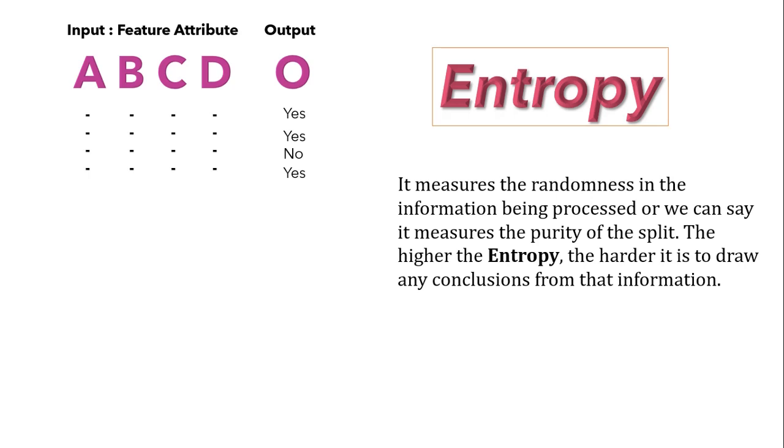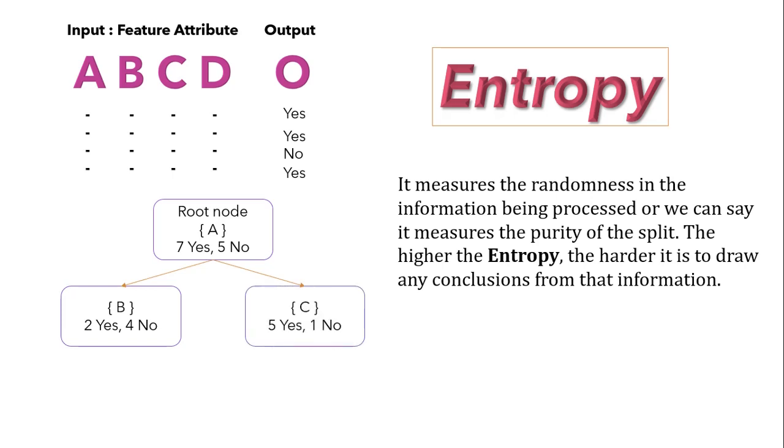Entropy measures the purity of split. Let's say my root node has 7 yes and 5 no, and when I split this into branches and come to node B, I got somewhere around 2 yes and 4 no, and at node C I got 5 yes and 1 no. You can see that the split is not pure subtree as it contains both yes or no, and pure subtree basically means that either we should be getting yes or no. Based on this, again I will split this subtree.